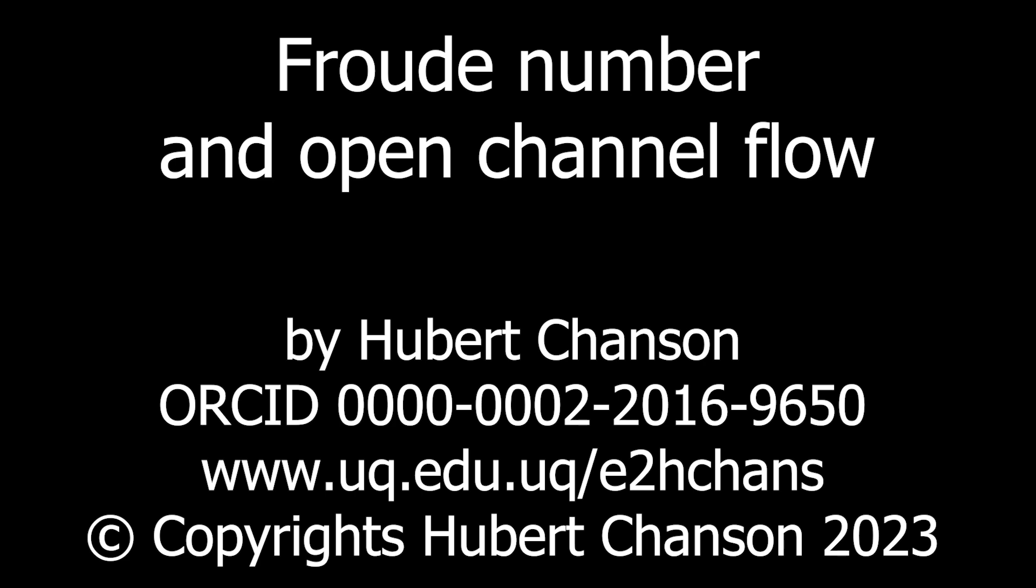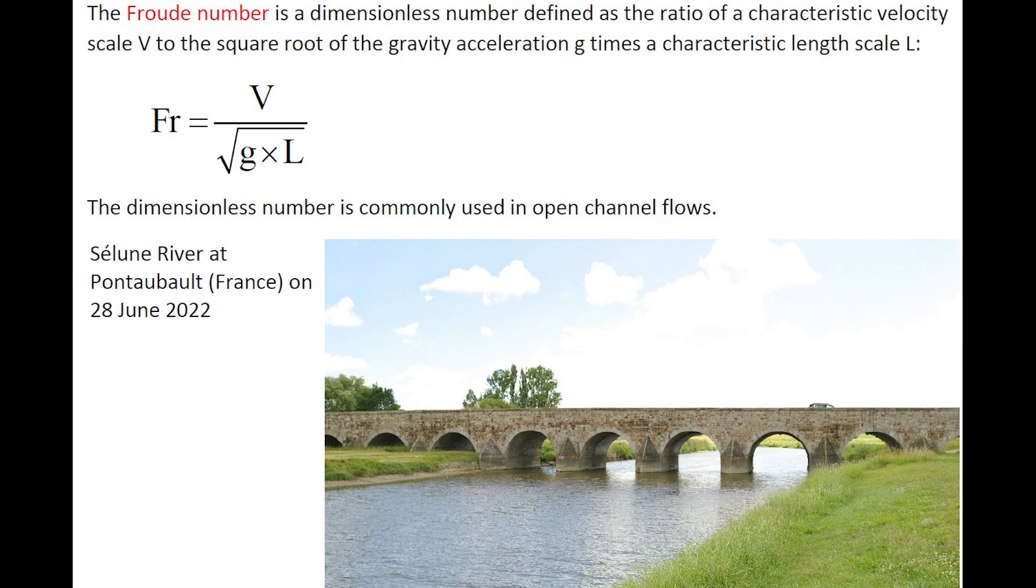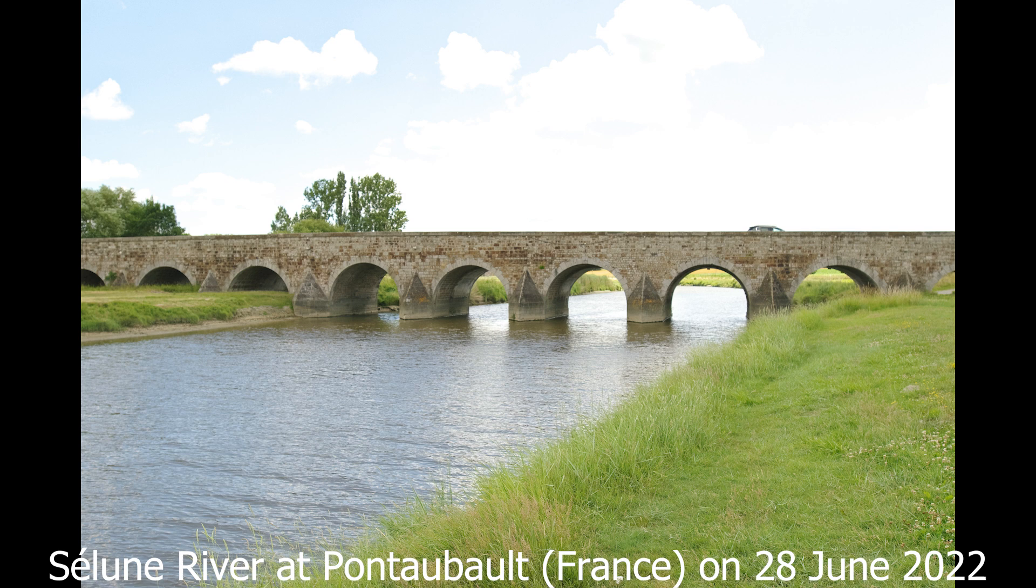Welcome to this talk on the Froude number and its application to open channel flow. The Froude number is a dimensionless number, defined as the ratio of a characteristic velocity scale v to the square root of the gravity acceleration times a characteristic length scale L. It is commonly used in open channel flow. On this photograph, I present the free surface flow of the Sélune River in France at Pontaubault.